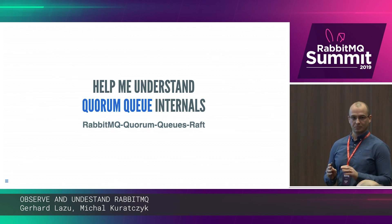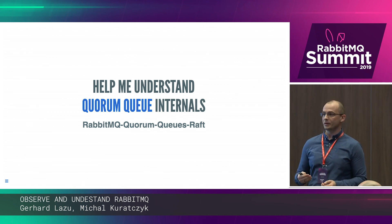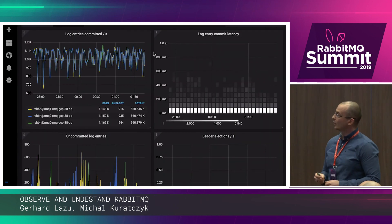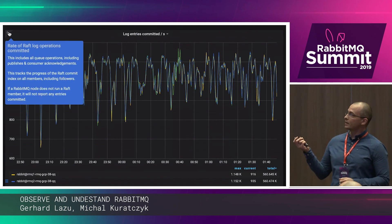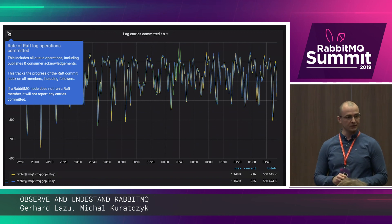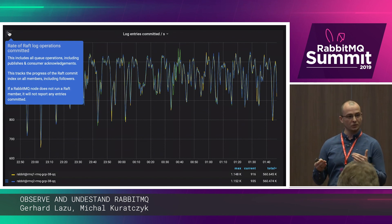We've seen the Erlang distribution — maybe it was a bit more than you wanted to see, a bit too deep-dive-ish, but that's okay. Now we'll look at the RabbitMQ quorum queues internals. To most of you this may not mean a lot now, but as you start using them you will want to know what's happening under the hood. Someone on your team with experience in Raft or Erlang may see this and say, 'I can tell you what's going on.' We can see the log entries that are being committed per second, with a nice explanation of what that means and what is good and bad — a real-time view into log operations on a node-by-node basis.